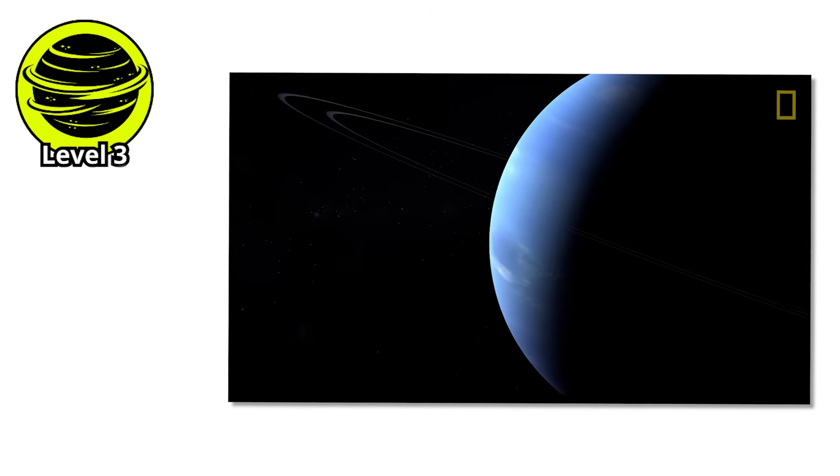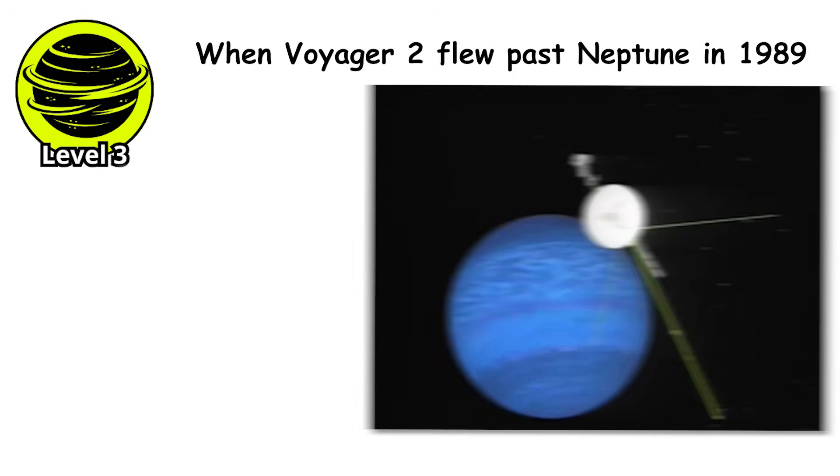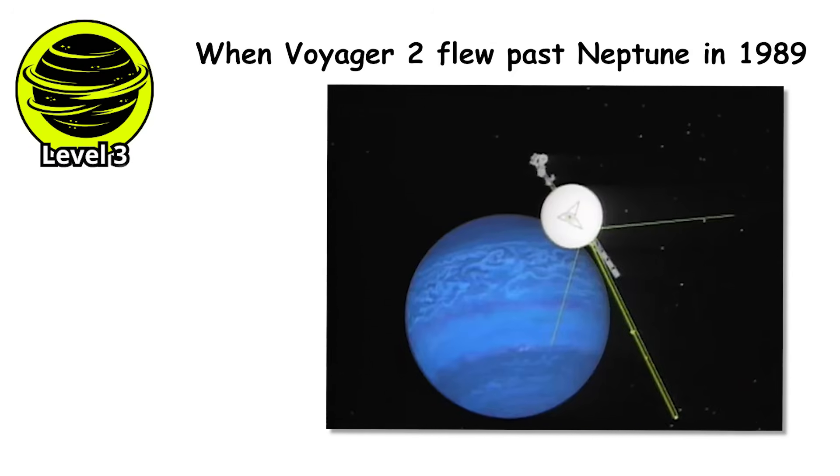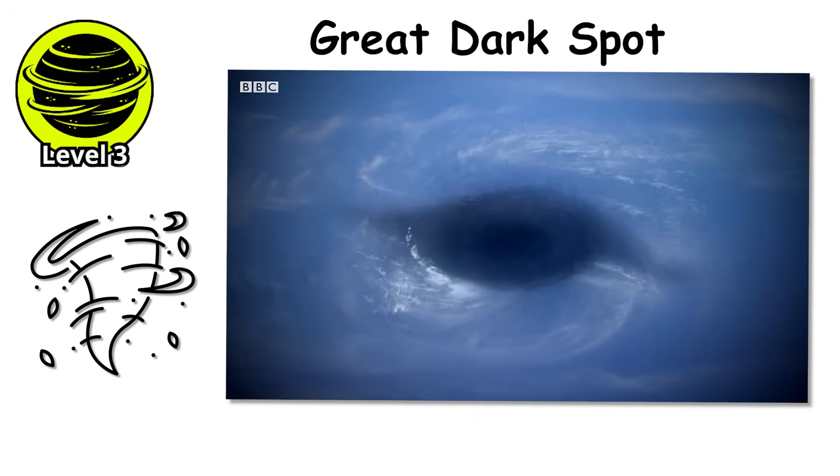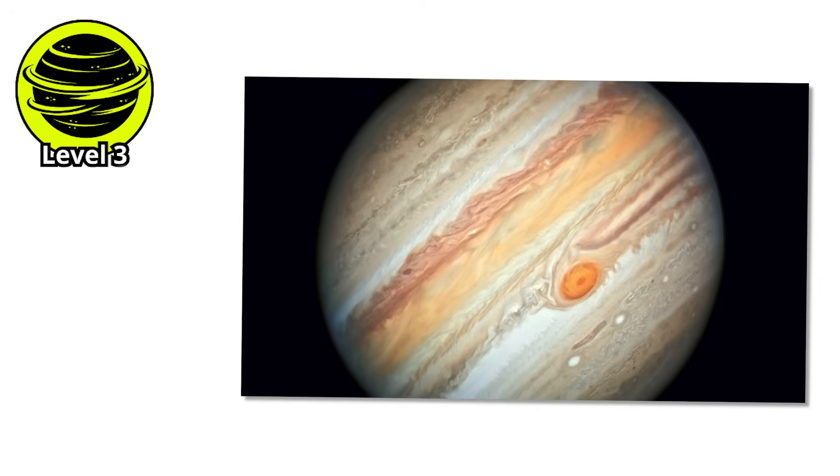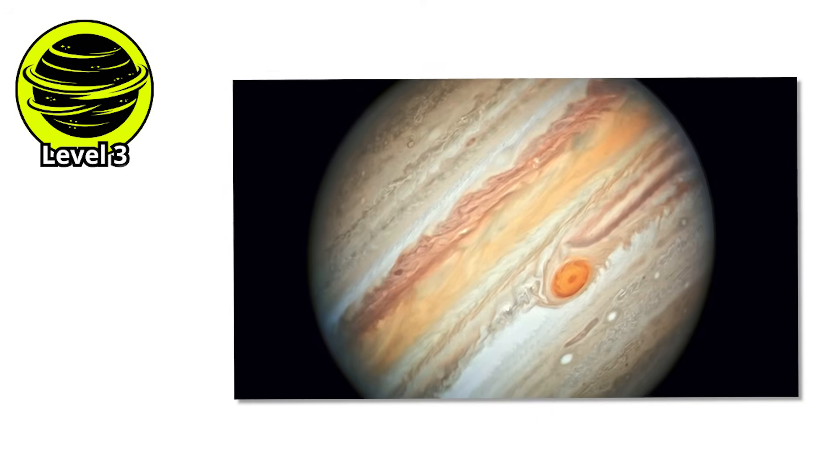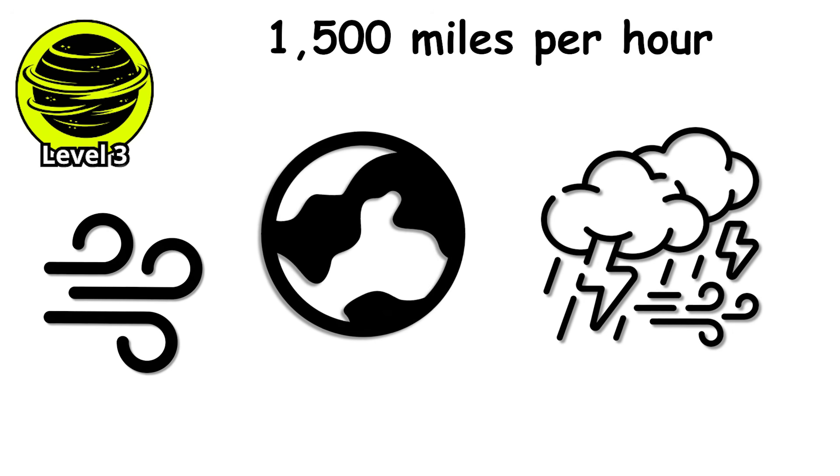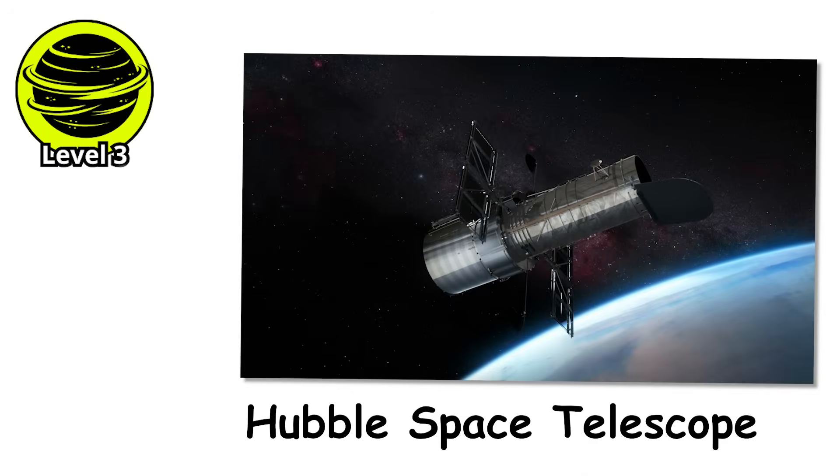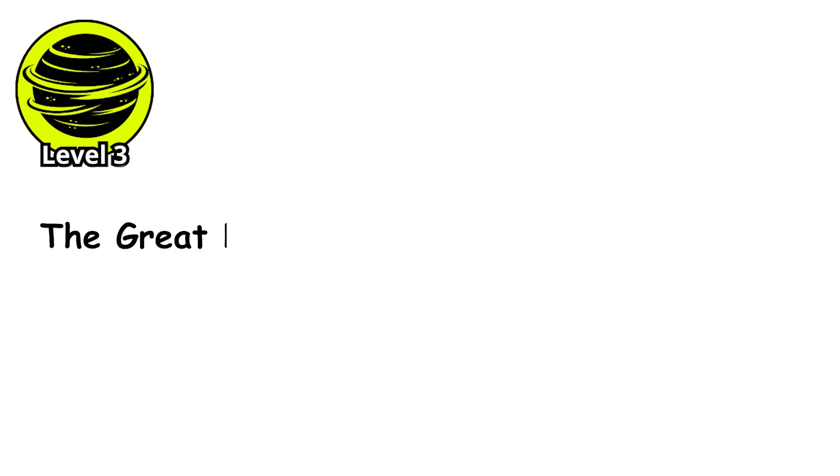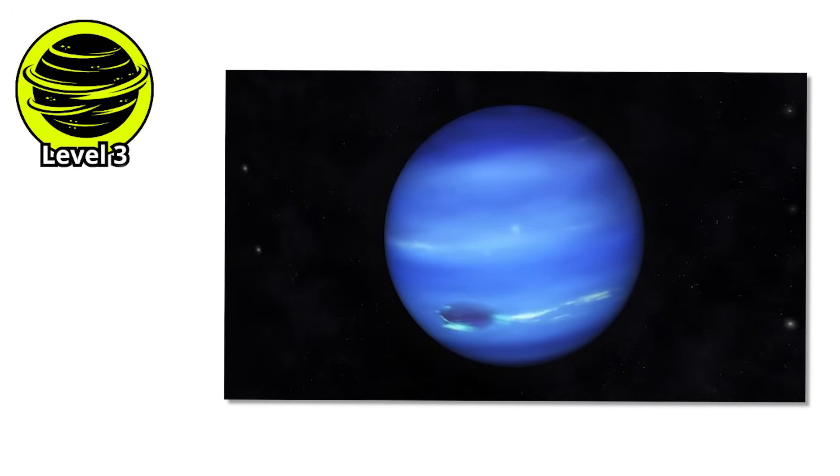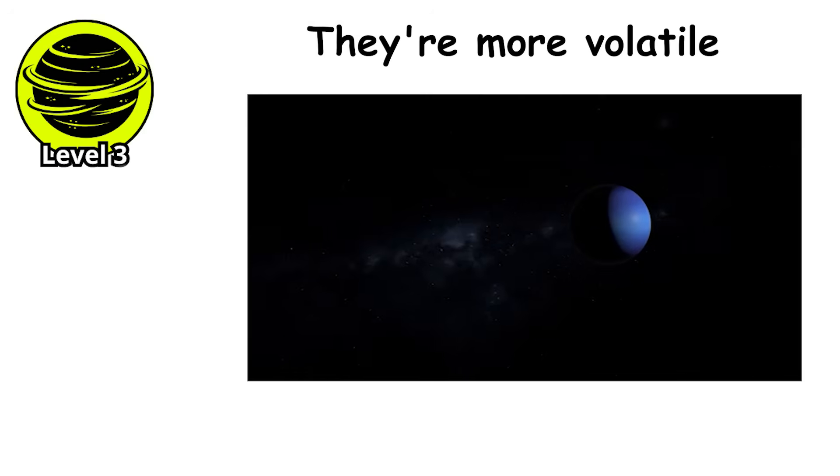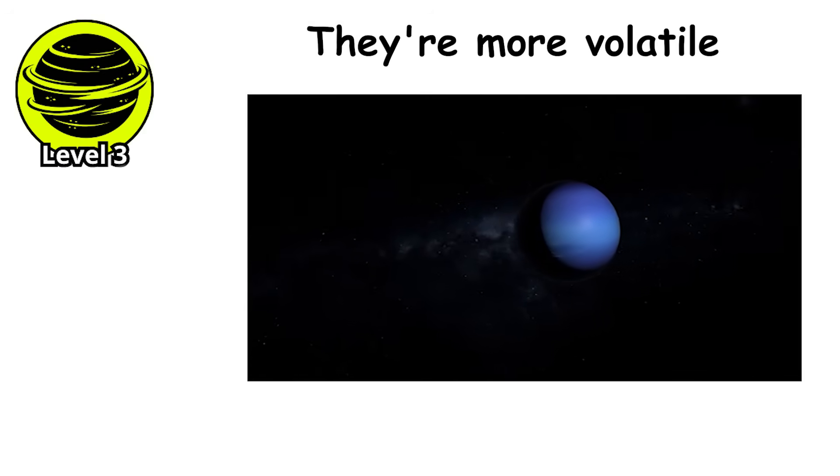When Voyager 2 flew past Neptune in 1989, it discovered a storm system dubbed the Great Dark Spot, similar to Jupiter's Great Red Spot, but even more dynamic. This storm was roughly the size of Earth, with winds exceeding 1,500 miles per hour at its edges. But when the Hubble Space Telescope looked for it five years later, the Great Dark Spot had completely vanished. In its place, a new storm had appeared in a different hemisphere. Neptune's storms don't last centuries like Jupiter's. They're more volatile, appearing and disappearing over the course of years or even months.